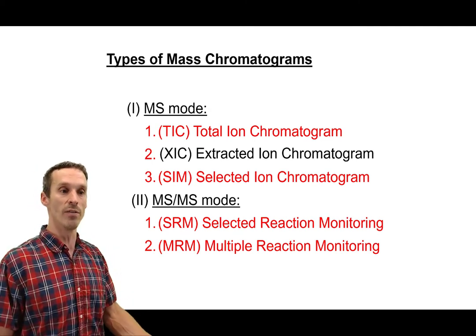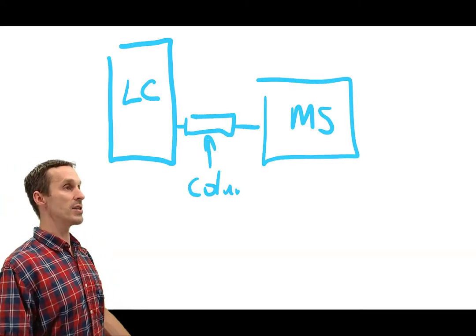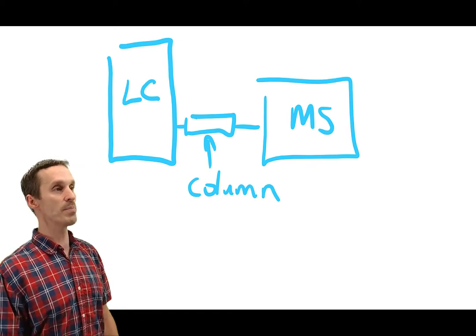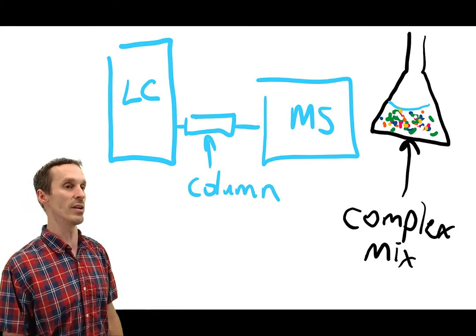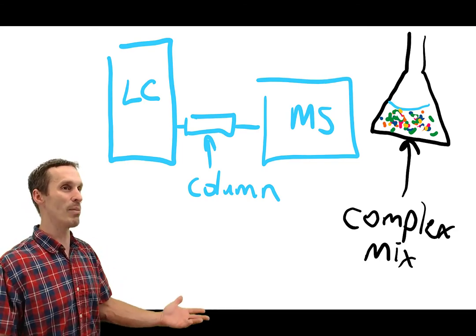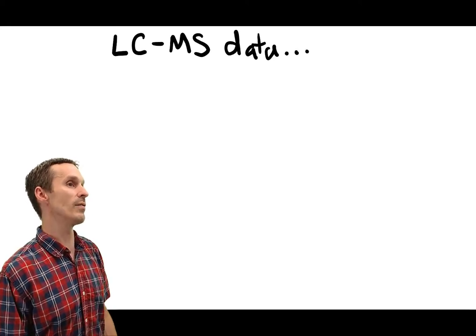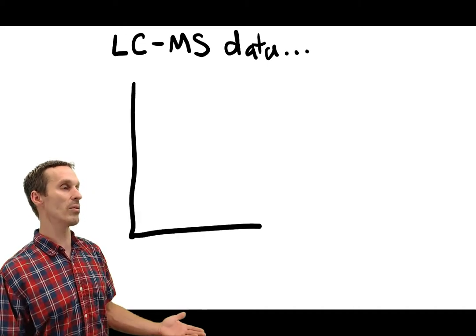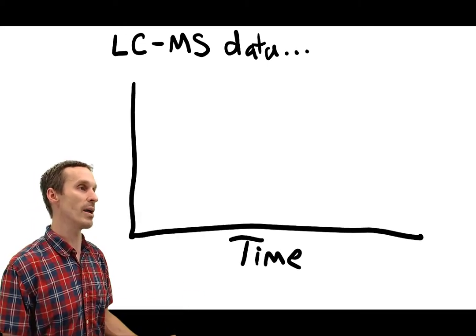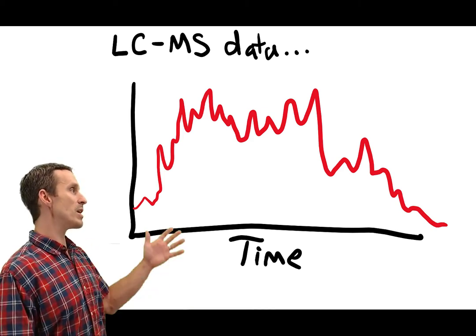Imagine that we have our LC-MS system. We've got the column, LC pumps, and the mass spectrometer at the back end, and a sample. The sample is going to contain all kinds of different things. Maybe that's like all the metabolites that are floating around in a plasma matrix, so a very, very complicated system. You can imagine then that if we're going to do analysis of it, there's going to be all kinds of data being revealed. How do we display that data? What are we looking at? The easiest way is to display what we would call a total ion chromatogram.